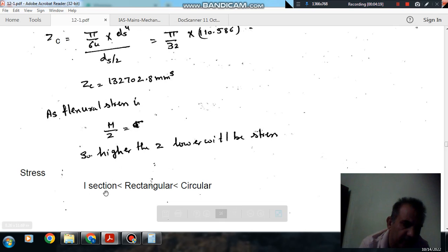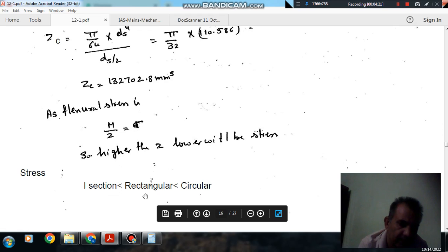So more the Z, lesser will be stress. So I-section will have lesser stress, and then rectangular section in between, then circular section has maximum stress. So answer is this. This is the flexural strength. So answer is this. Thank you.